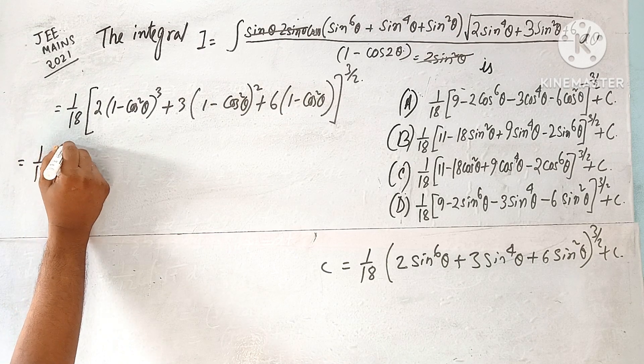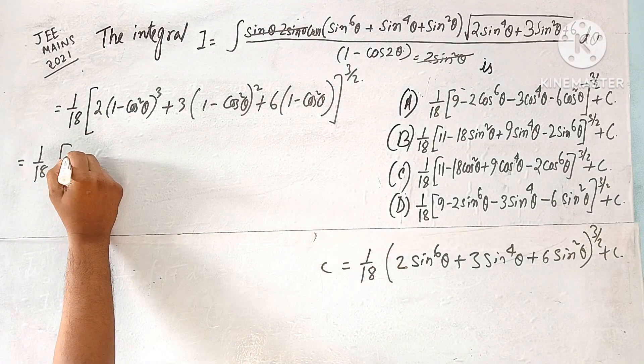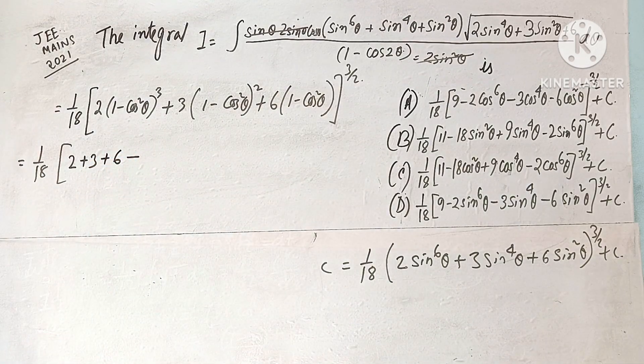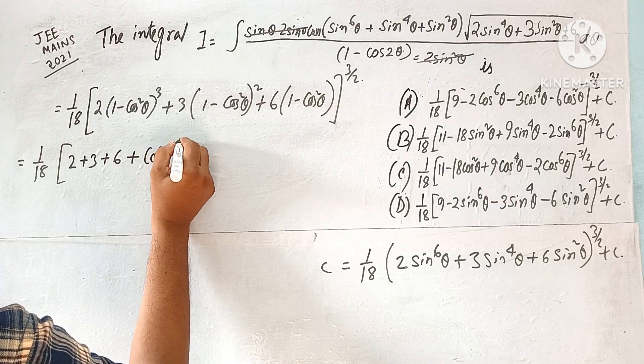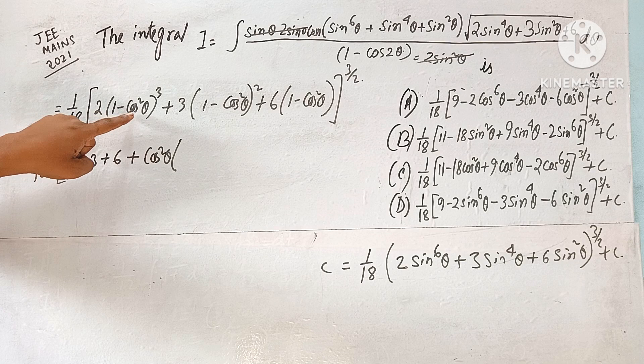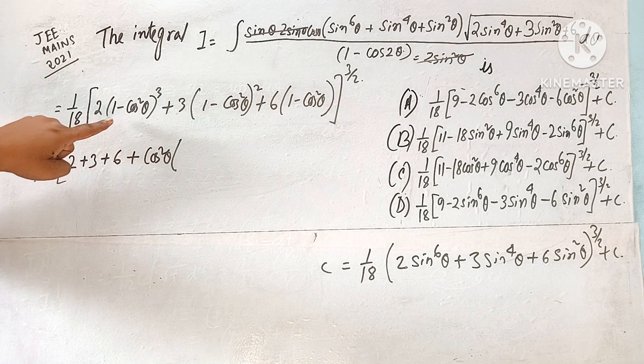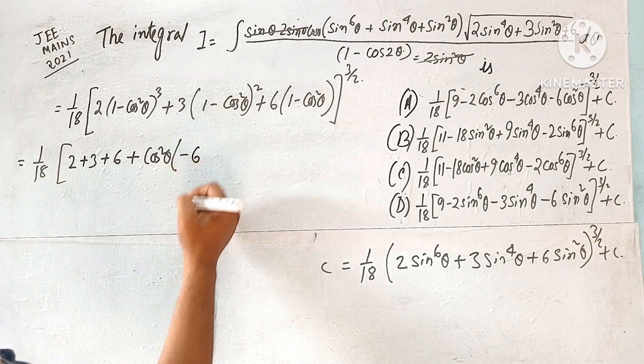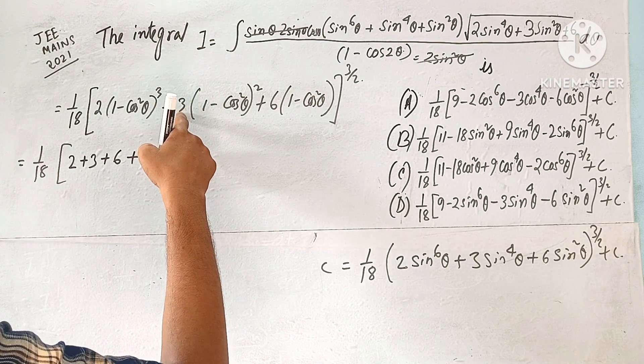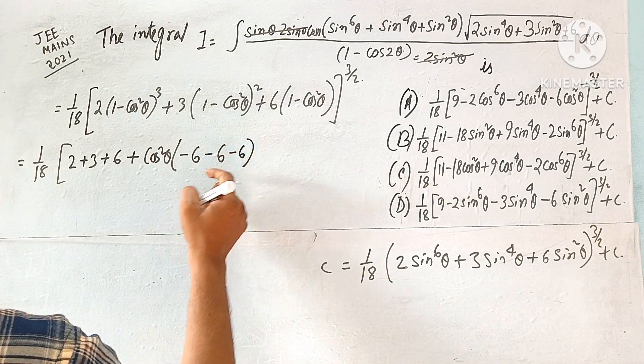1 by 18, constant term here. a minus b whole cube, constant term 1, 1 into 2 is 2. Here also 1 plus 3 is 3. Here also constant term 6. Then cos square, cos square, here will come 3a, a square b, a value 1, 3a square b cos square, 3a square, 1 square cos θ, 3 to just 6. a minus 6, a minus 6. Here 2ab cos square, 2, 2 into 3, minus 6.